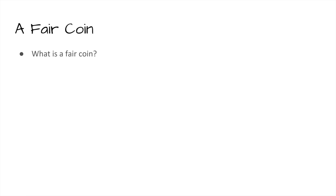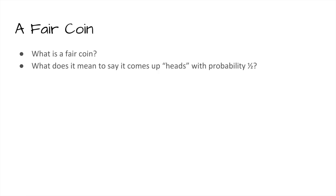So what do we mean by a fair coin? Most of you would say it'll come up heads with probability one half. Implicit in that is the idea that you have some sort of repeatable experiment. You can flip the coin many times. If you flip it 1,000 times, your belief is that if it's fair, it should come up about 500 heads, and not too far away from that.